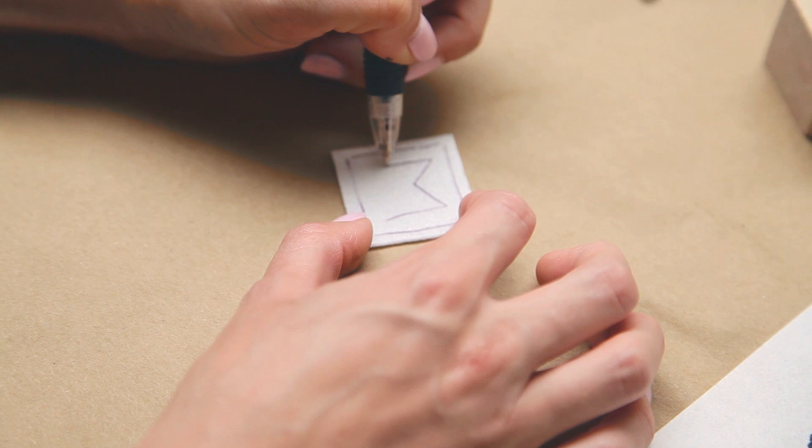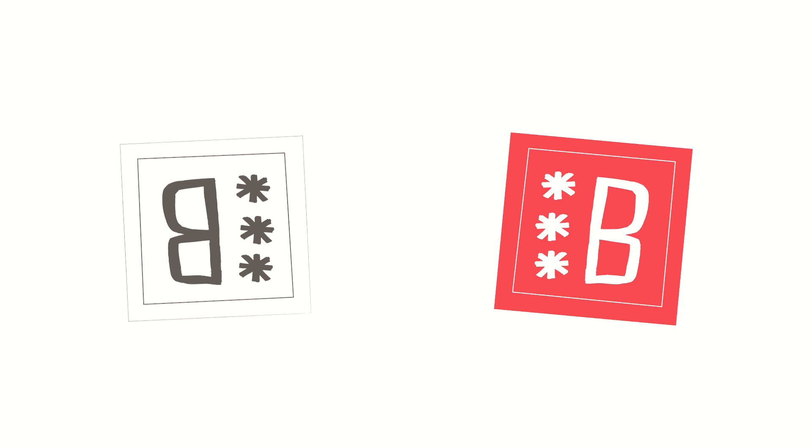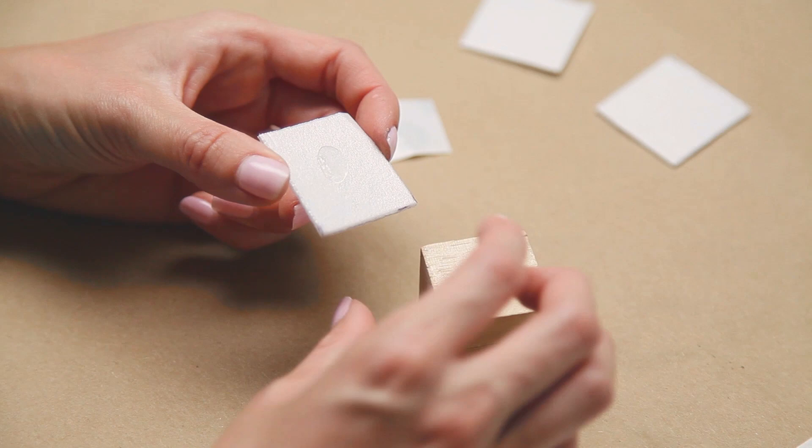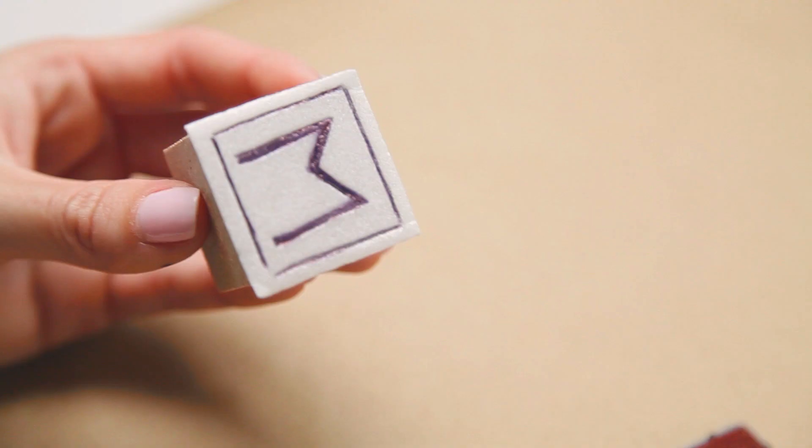Using a pen or pencil, lightly sketch your design onto one of the foam squares. Stamps produce a mirror image of what you carve, so make sure to create your image backwards. Press more firmly to make an indent in the foam. Attach it using a glue dot to your wooden block.